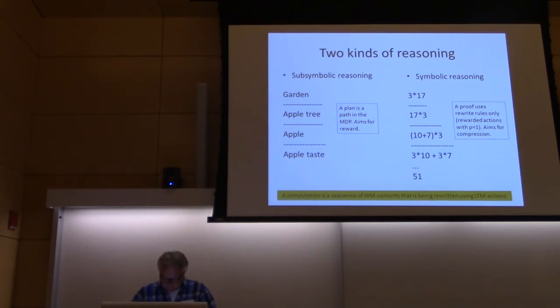Now we can show how we do reasoning. We have the sub-symbolic reasoning here, that will be just a path in the MDP. Remember that the LTM here is also an MDP, so it would be like a plan: you go from one state to another using certain actions and you keep track of the reward and the probabilities. Symbolic reasoning then you can use the rewrite rules and replace content in the working memory instead. You can do both kinds of reasoning here.